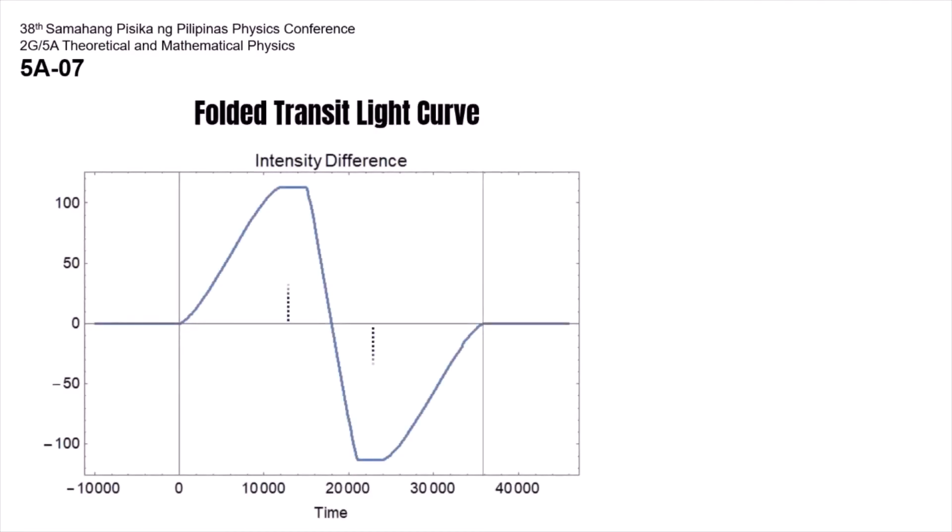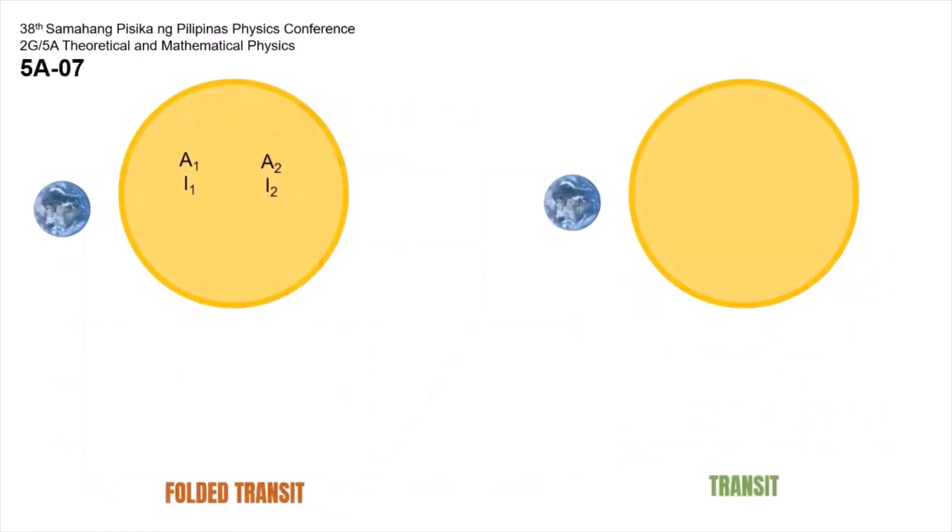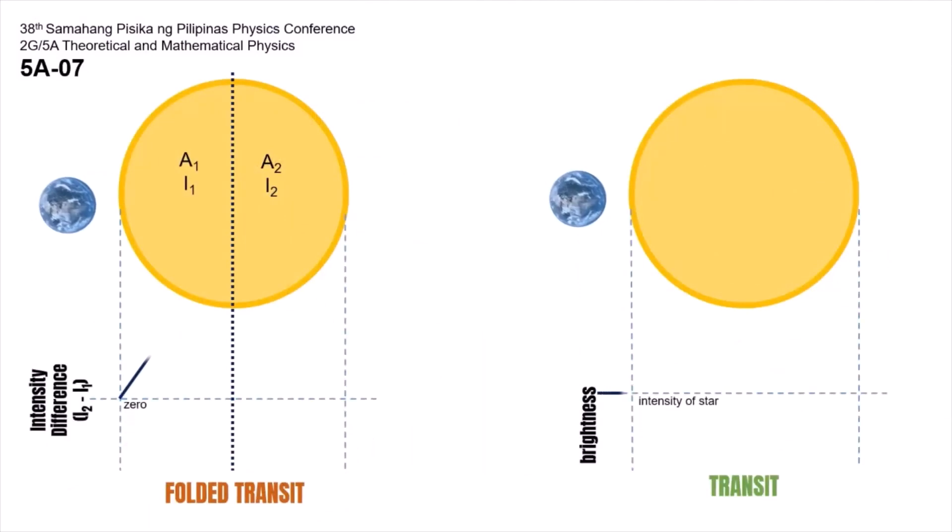The rise and the dip corresponds to the area of the planet. From the width of the overall curve, we can get the velocity of the planet using this equation. We can also use the slope of this line to obtain the velocity. Not only does our method remove the signal produced by the host star, it also increases the planetary signal by 100% as compared to the transit method.